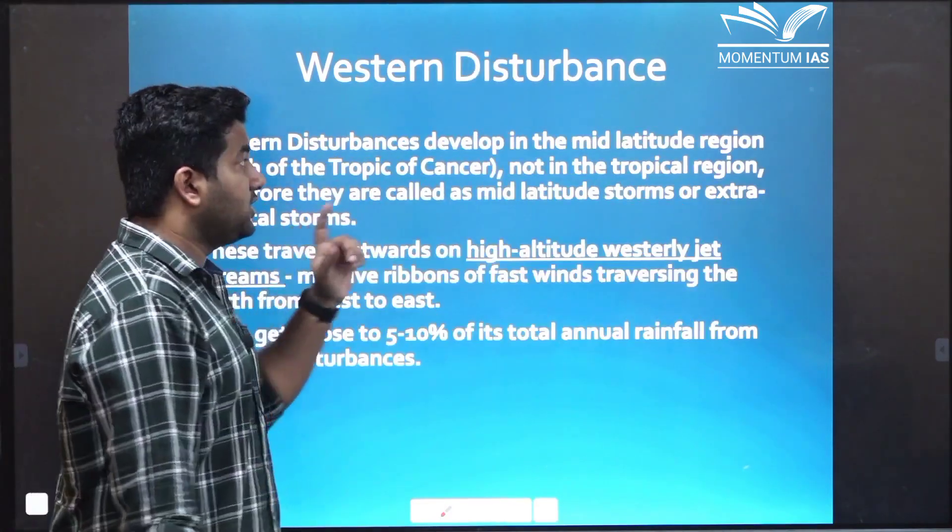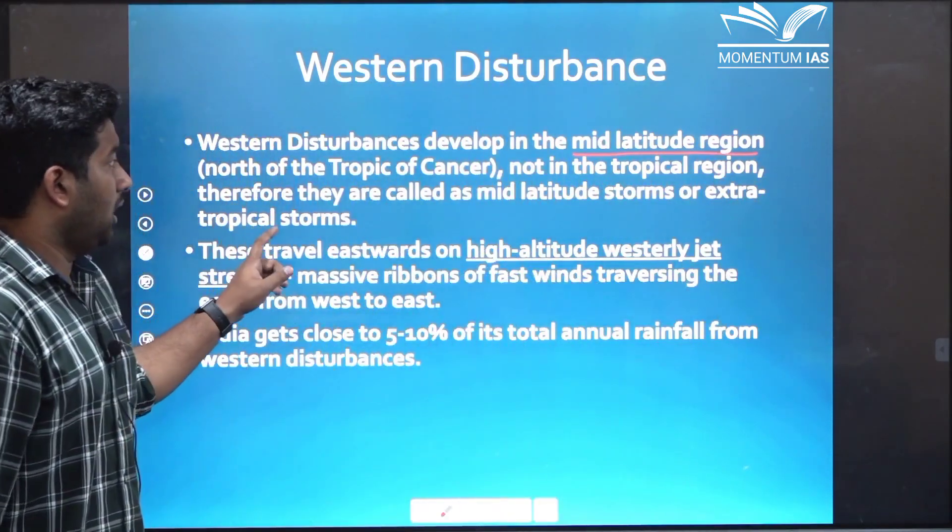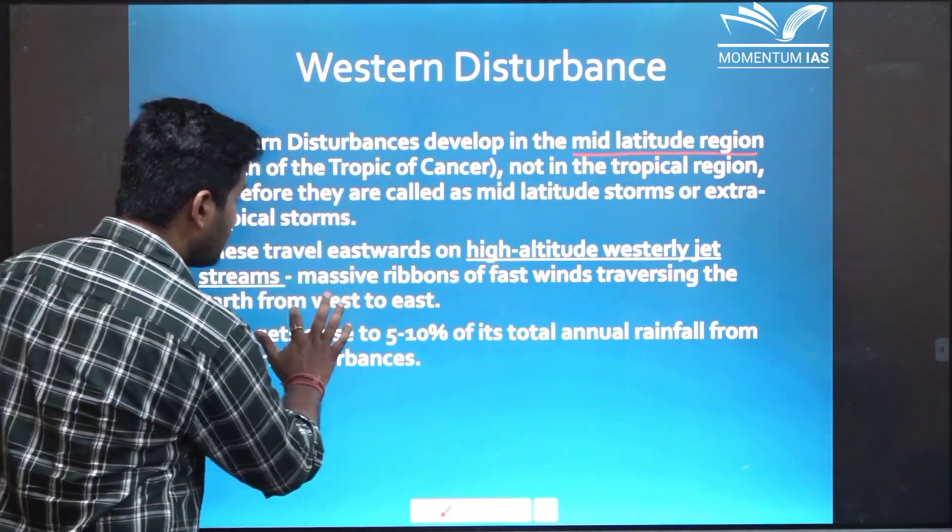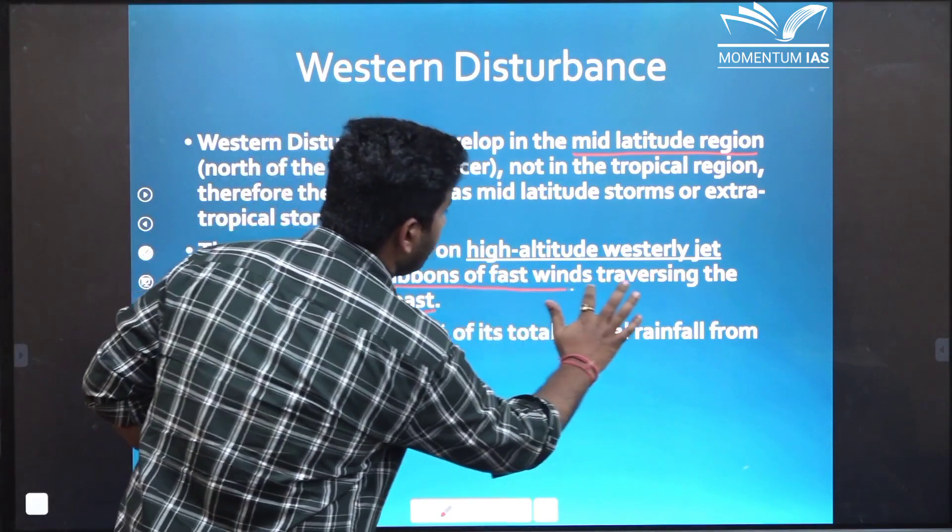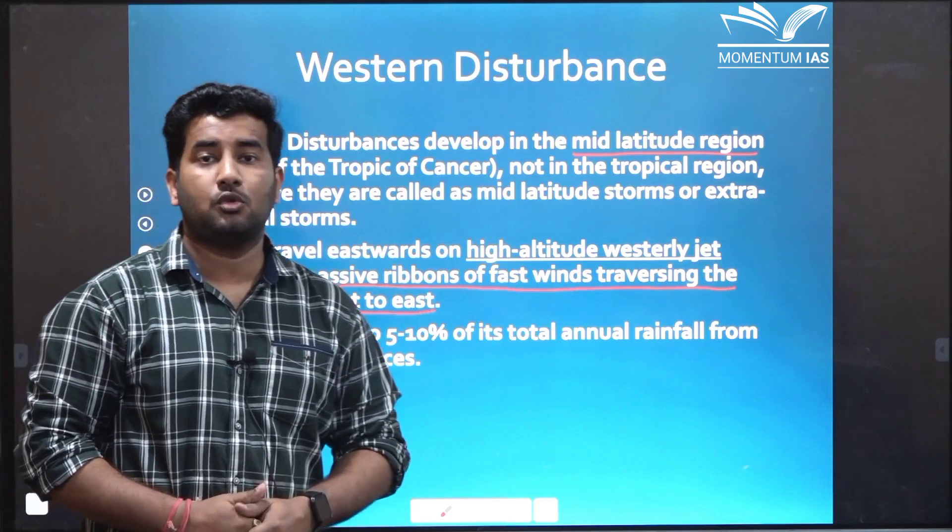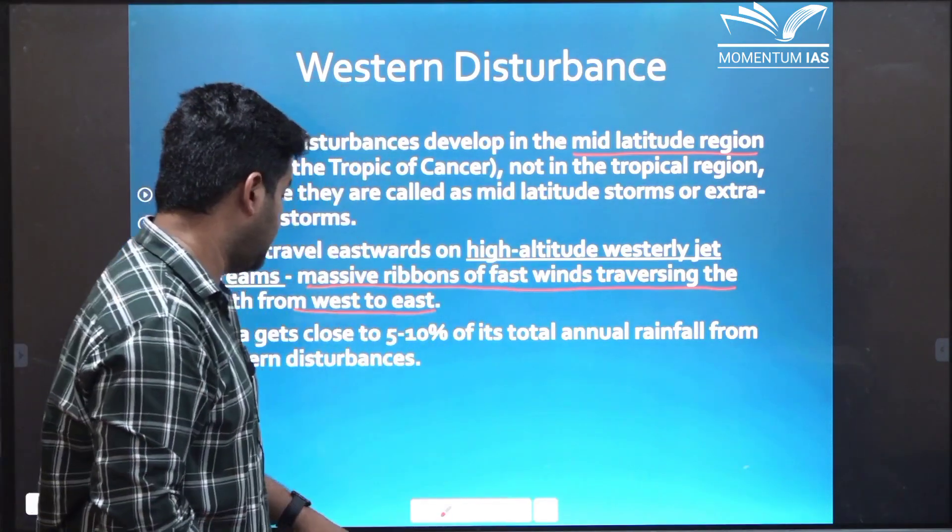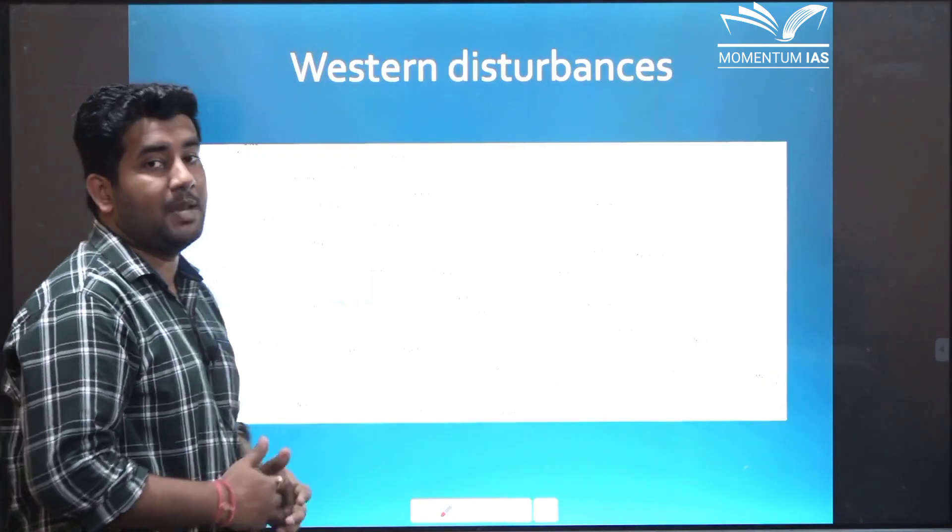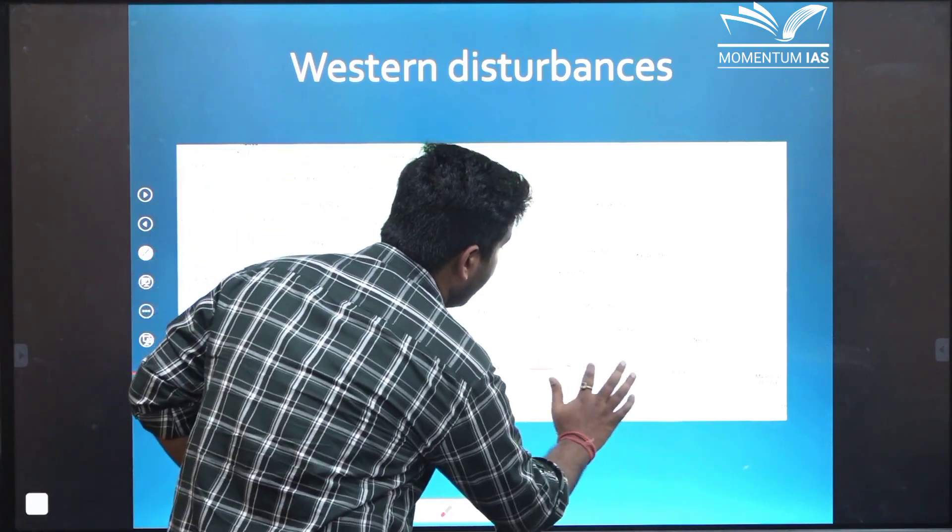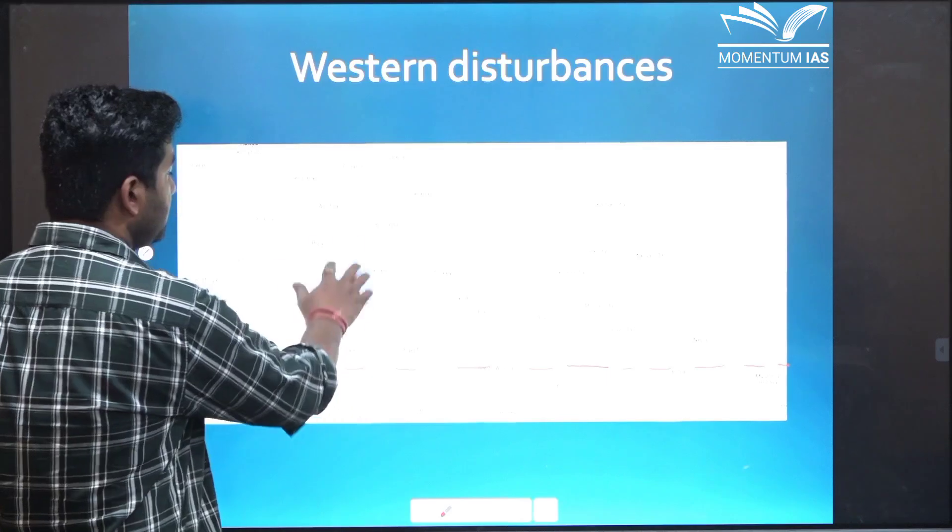Western disturbances develop in the mid latitude region. They travel eastward from west to east through massive ribbons of transfers which we popularly call as jet streams. India gets close to 5 to 10 percent of our annual rainfall from western disturbances. Let's discuss this with the help of a map.